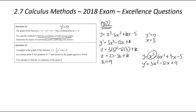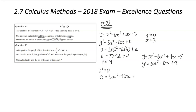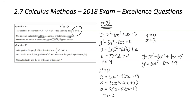We substitute k back in: y is now x cubed minus 6x squared plus 9x minus 5, and the gradient function is 3x squared minus 12x plus 9. It's a cubic, so we're expecting two turning points — we've got information on one and need to find the other. Setting y' equal to zero: 3x squared minus 12x plus 9 equals 0. They all have a factor of 3, so that's x squared minus 4x plus 3, which factorizes to (x minus 3)(x minus 1). So x₁ equals 3 and x₂ equals 1.